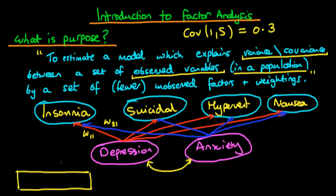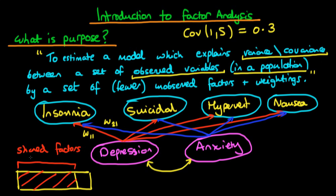We might be thinking about the variance of insomnia across our sample, though typically we're trying to explain the variance of insomnia in the population and estimate that using our sample of data. We suppose that there is a proportion of insomnia which is due to these shared unobserved factors. We call this variance communality, because it is the proportion of variance explained by a set of factors which are common to the other observed variables. But we also suppose that there is a proportion of insomnia which isn't explained by these unobserved factors.